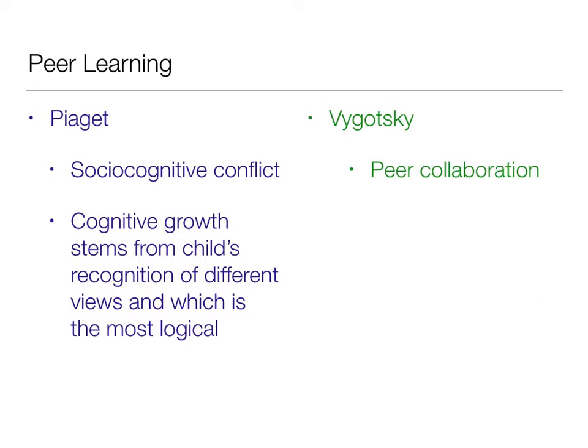For Vygotsky, peer collaboration was huge. He said it was best done when peers were equally matched, and that both would reach higher levels because of cooperative learning in that peer collaboration. He also talked about intersubjectivity — that commitment to finding common ground and a shared perspective — which was an opportunity for further learning, very similar to Piaget's socio-cognitive conflict. The difference is Piaget looks at it from the individual's perspective, while Vygotsky looks at the interaction itself, at both people working together.